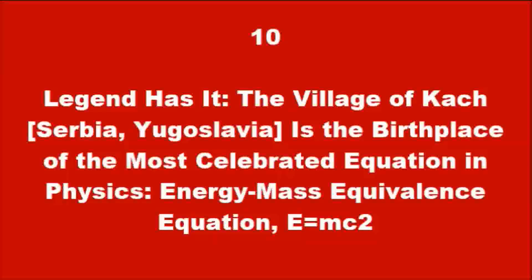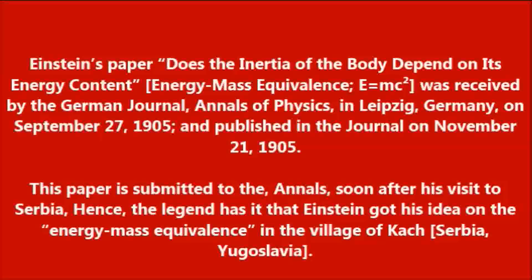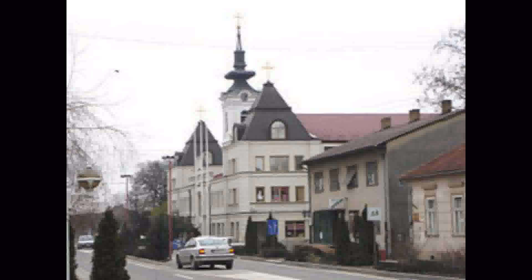Legend has it: the village of Kać, Serbia, Yugoslavia, is the birthplace of the most celebrated equation in physics — the energy-mass equivalence equation, E equals mc-squared. Einstein's paper 'Does the inertia of a body depend on its energy content?' — energy-mass equivalence, E equals mc-squared — was received by the German journal Annals of Physics in Leipzig, Germany, on September 27, 1905, and published in the journal on November 21, 1905. This paper was submitted to the Annals soon after his visit to Serbia. Hence, the legend has it that Einstein got his idea on energy-mass equivalence in the village of Kać, Serbia, Yugoslavia.